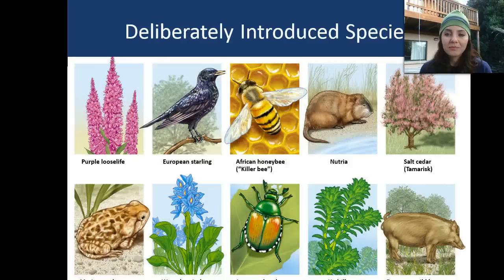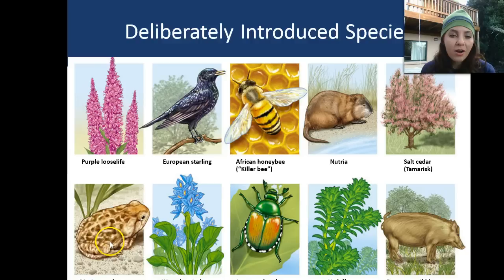Some species were deliberately introduced into North America: the purple loosestrife, the European starling, the African honeybee, nutria, the salt cedar, cane toads, water hyacinth, the Japanese beetle, hydrilla, and the European wild boar.